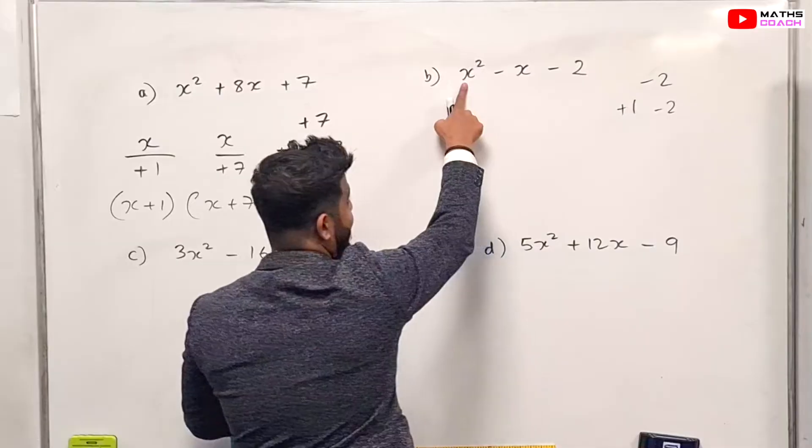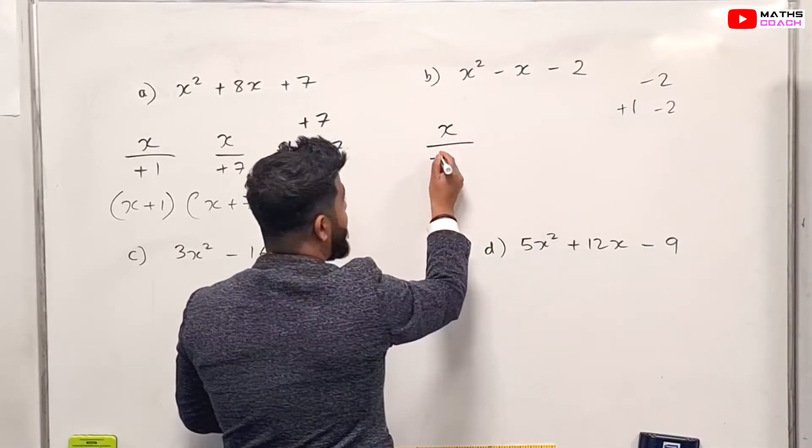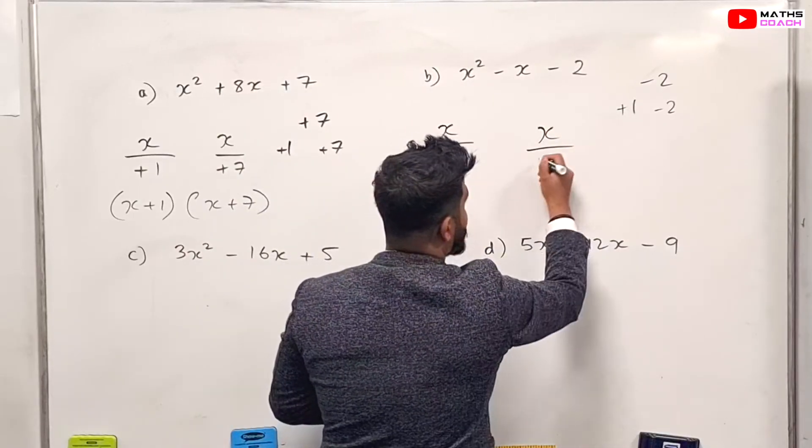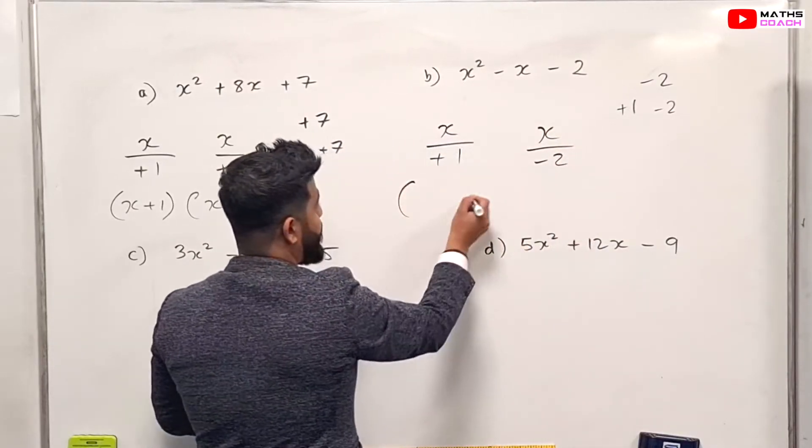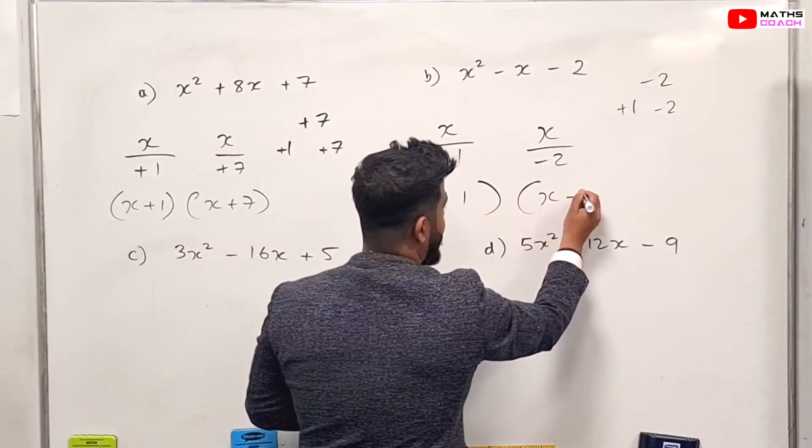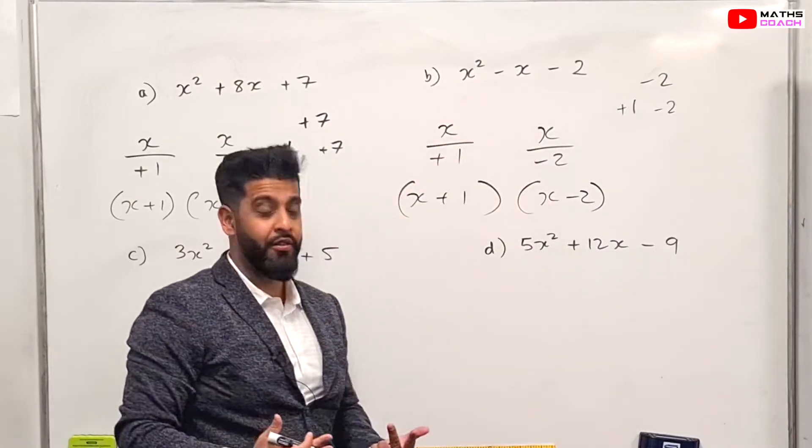Now again, you take this x squared but without the squared, just the x, and divide it by the first number, which is plus one. You do that with the second one as well. So x minus two. And then your bracket would be, in its simplest form, x plus one and x minus two. And this is this expression factorized.